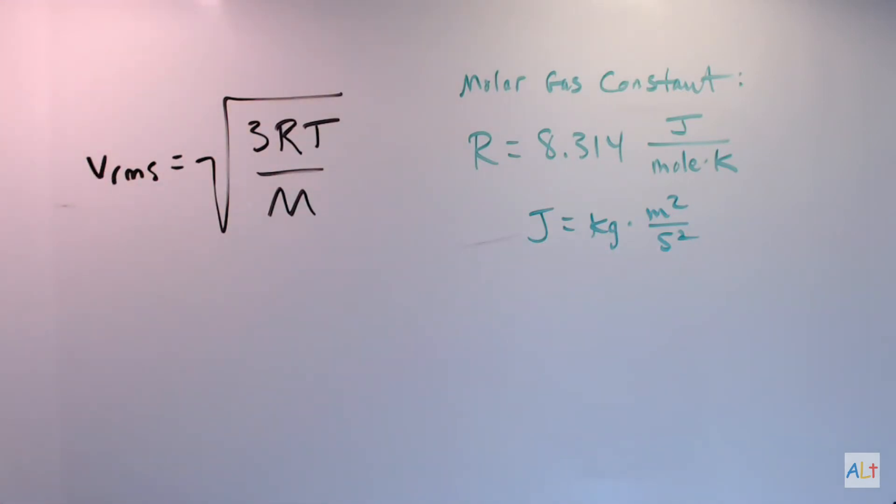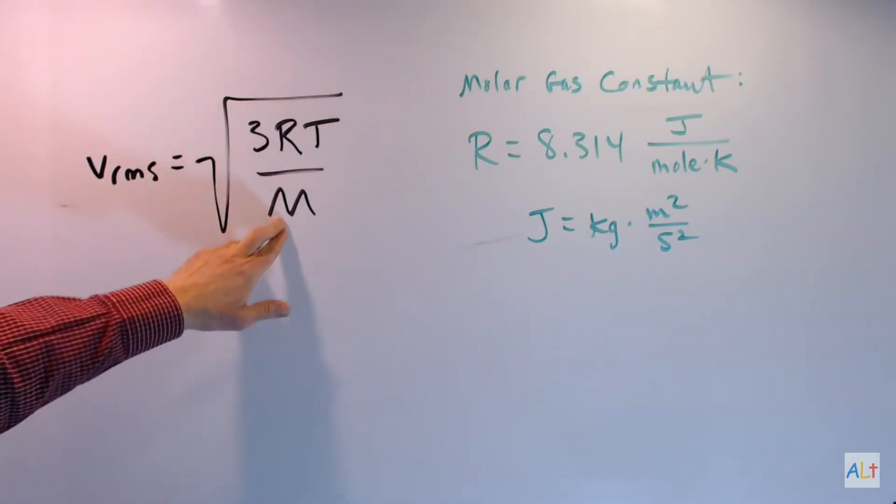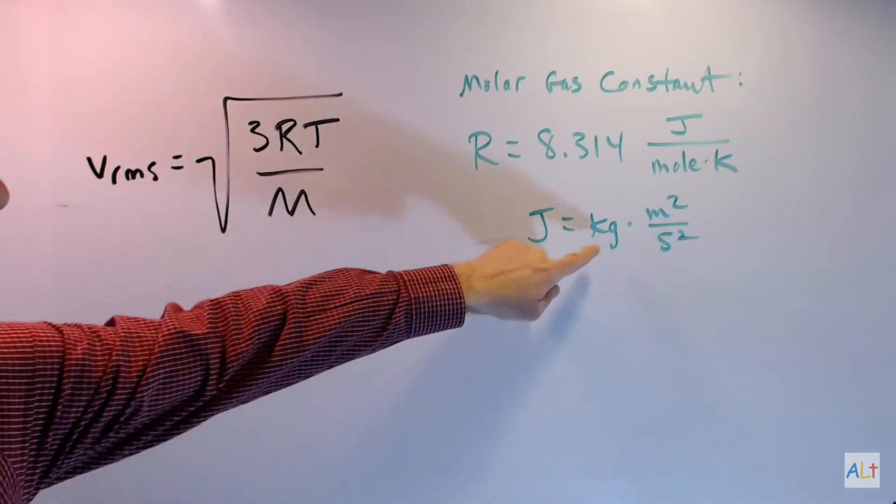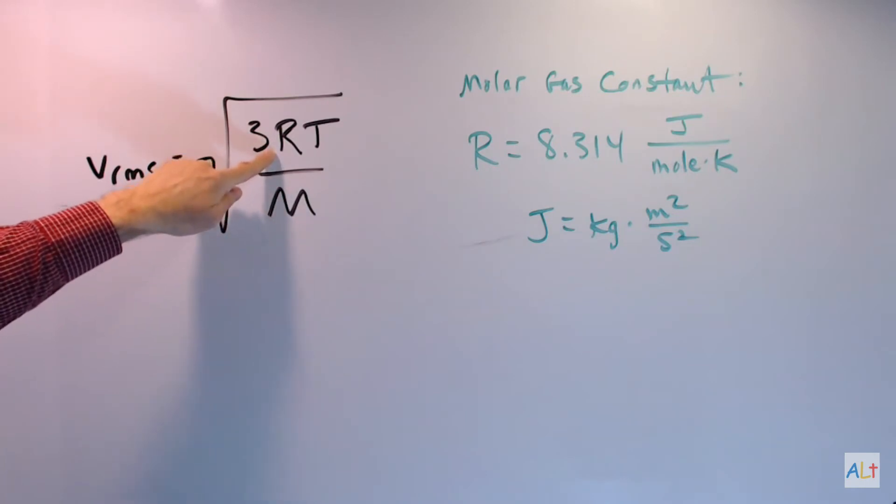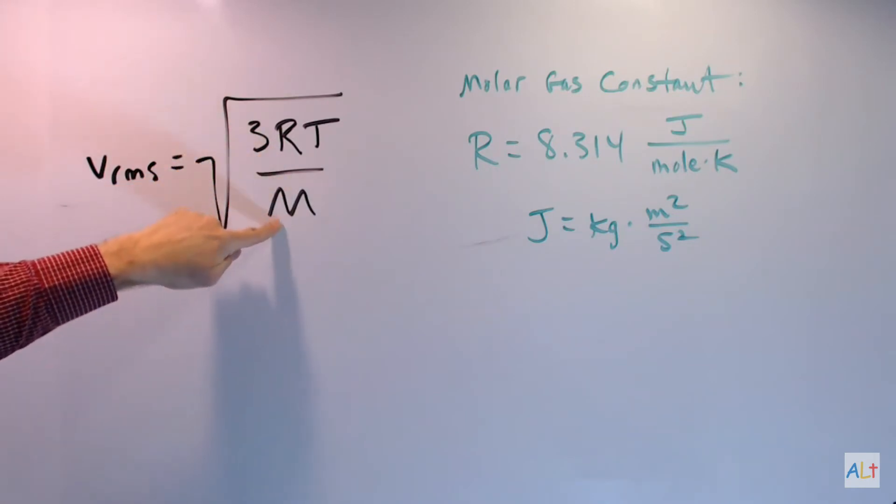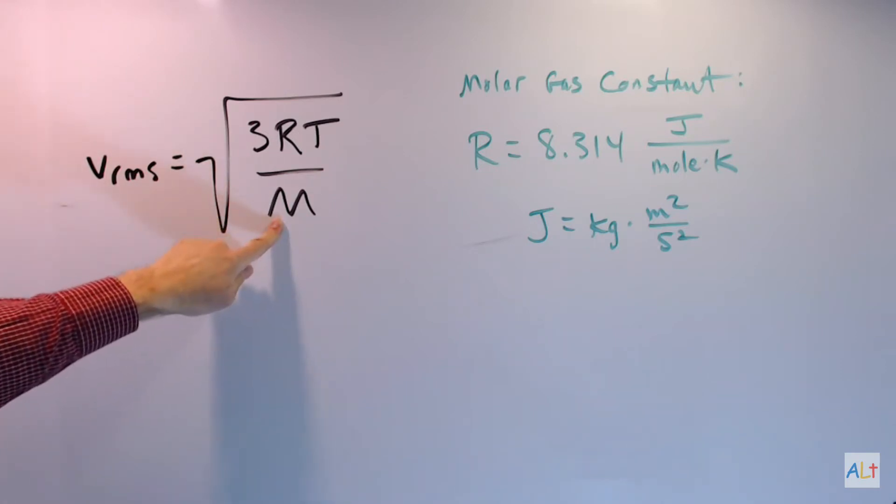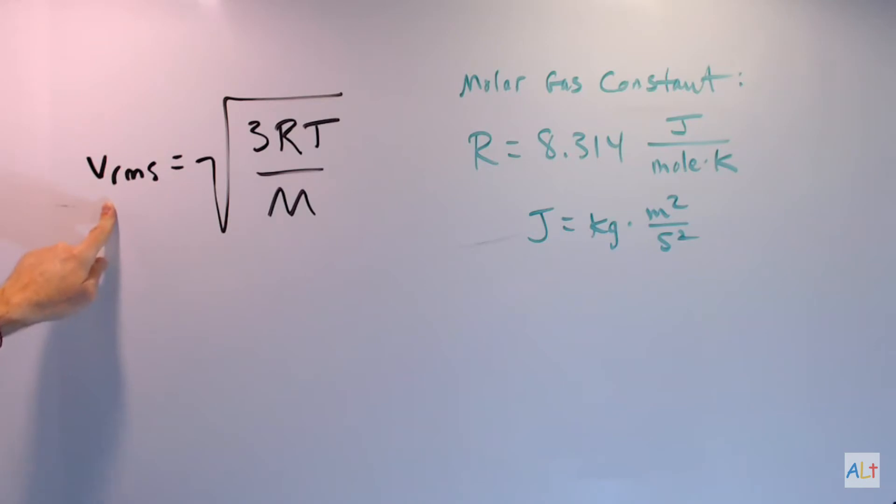So the quick and dirty way to ascertain what's going on with this M is to notice there's a kilogram here, which is up there, which is in there. So we need a kilogram down here to cancel that out. How do we know the kilograms need to cancel? Simple. There's no kilograms over here. Velocity is measured in meters per second.